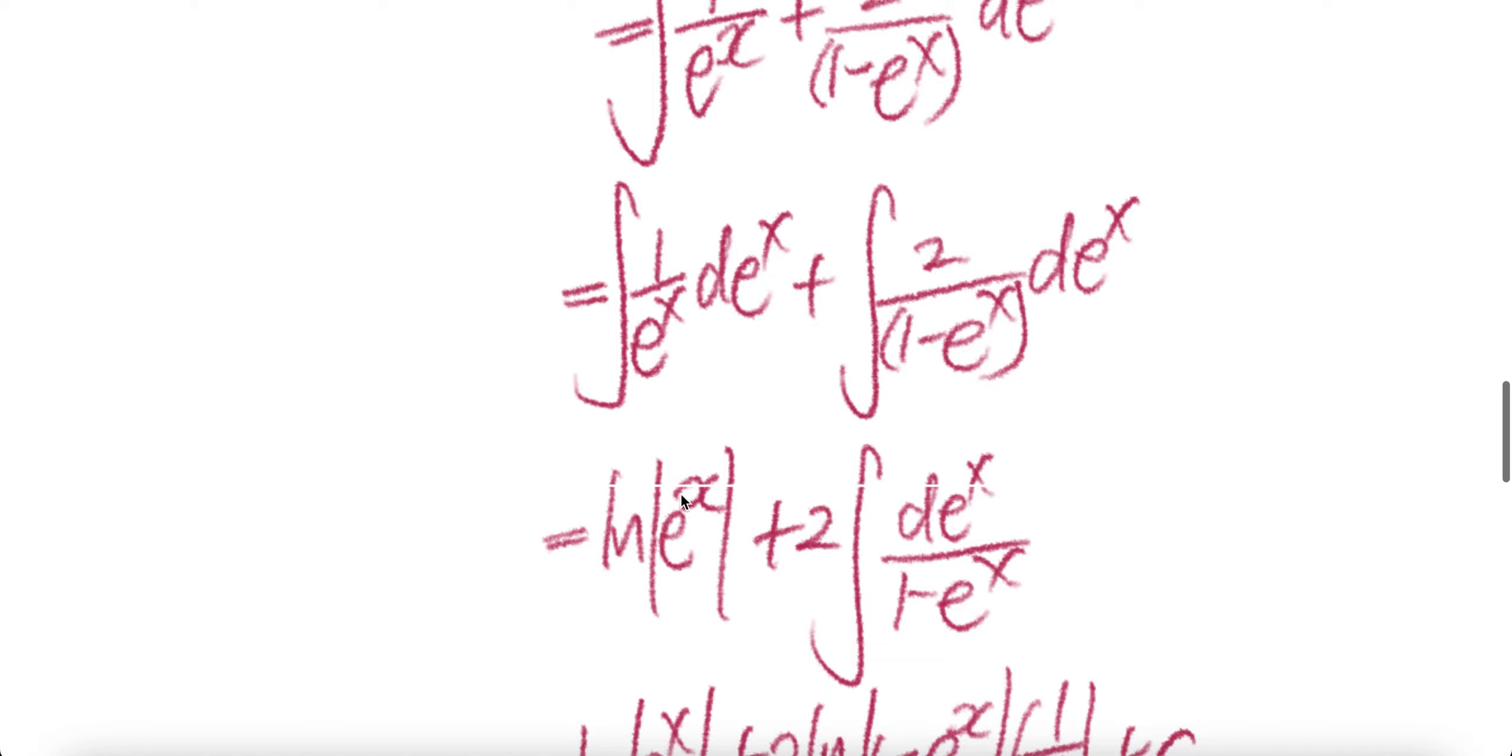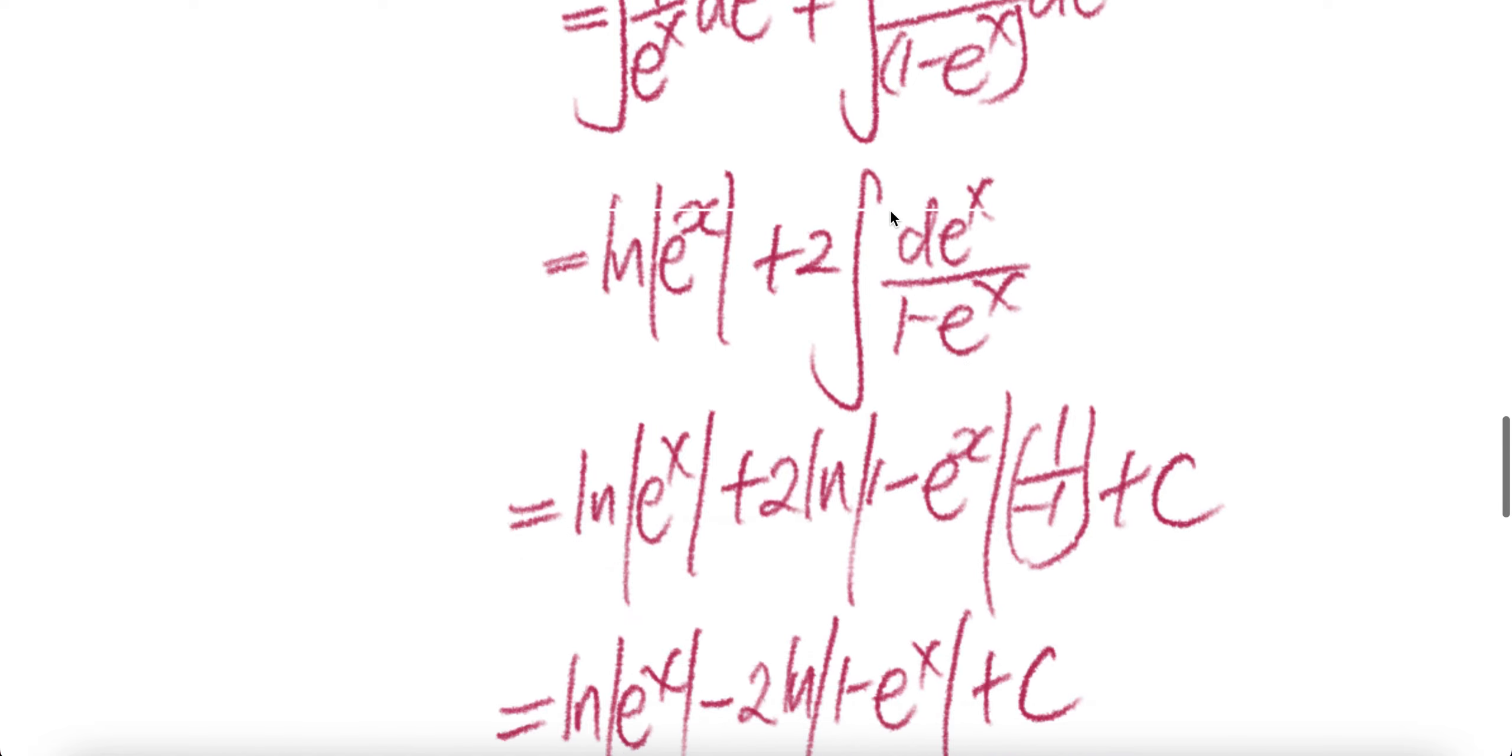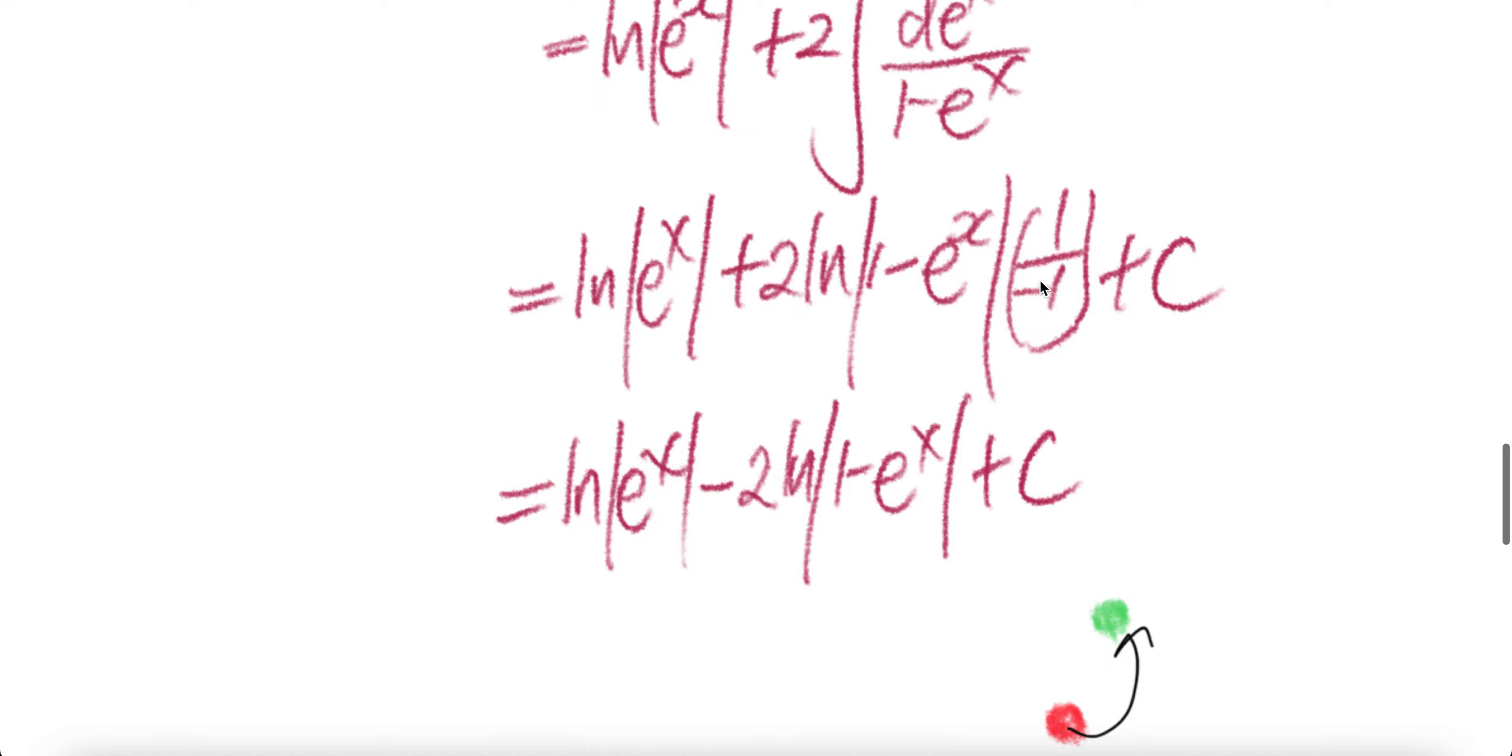Now the integral of this is ln absolute e to the power x. Actually, you don't need to put absolute because e to the power x is always positive. This one, 2 comes out and then you have integral d e to the power x divided by 1 minus e to the power x. The integral of this is ln absolute 1 minus e to the power x. Check for coefficient: 1 here minus 1 here. Different, therefore we need to correct by dividing by minus 1. Minus, bring over here, you get negative 2 ln absolute 1 minus e to the power x.